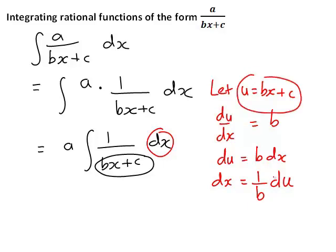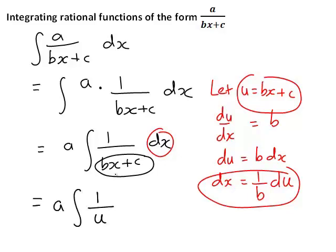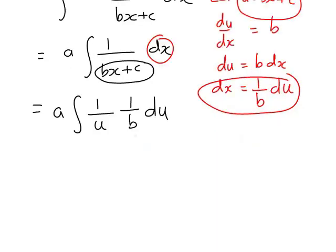And now substituting in this expression for u and this expression in terms of du, the integral is rewritten as a times the integral of 1 divided by u times 1 on b du. Now 1 on b is a constant so that can be taken outside the integral sign to give a divided by b times the integral of 1 on u du.